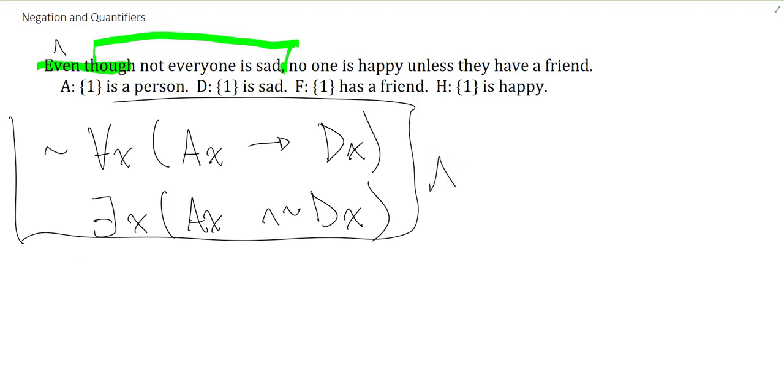At this point, I can do the other side, I have the and, and that's that. Now, the other side is a little tricky. It says no one is happy unless they have a friend. But the problem is that there's this interaction with the negation here and the unless, so it becomes a little unclear what we're talking about.